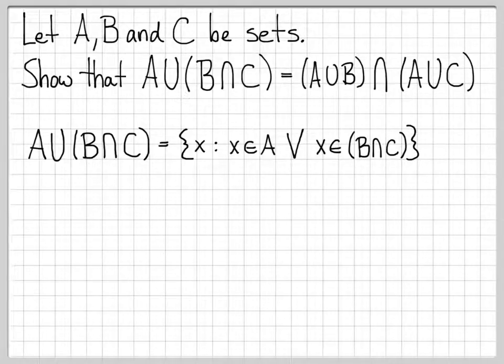We're dealing with a set A union B intersect C. So this is a collection of elements X such that X is in A or X is in the set B intersect C. So really what I've done to write down this set is I've just used the definition of union to write this down in our set curly bracket notation.